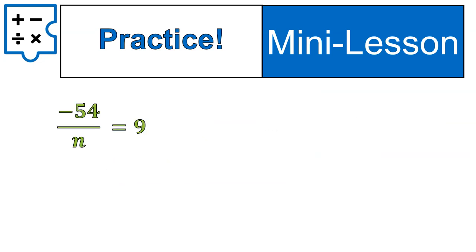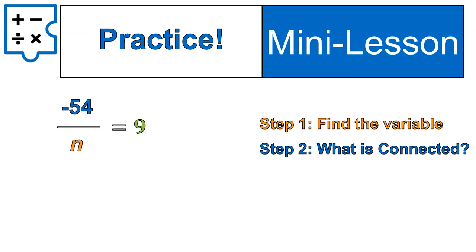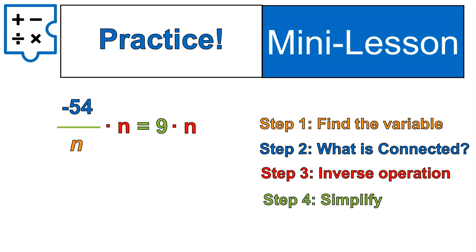Here's one final practice of this type with our variable in the denominator. It's definitely the hardest question type. It requires that you do all of that extra work. Our variable, n. What's it connected to? Negative 54. What are we going to do? Inverse operation. The inverse of that divided by n is to multiply times n on both sides. This gives us negative 54 by itself on the left and 9n on the right.